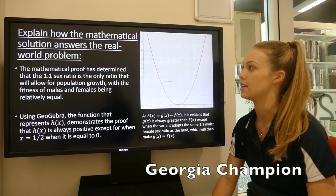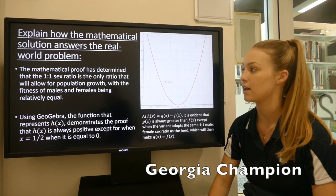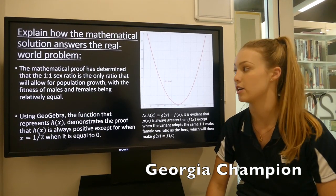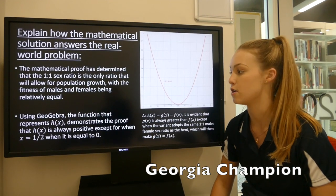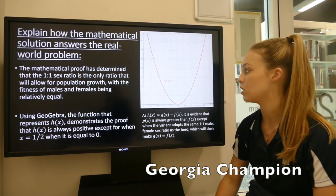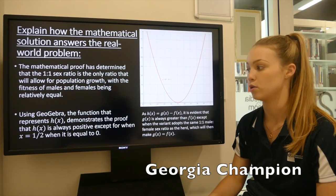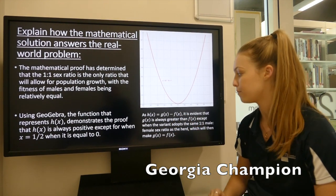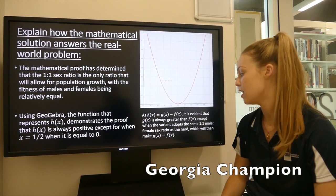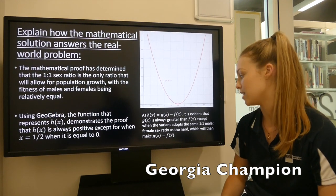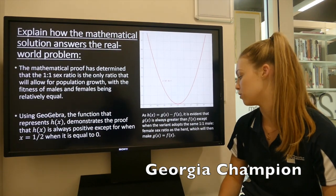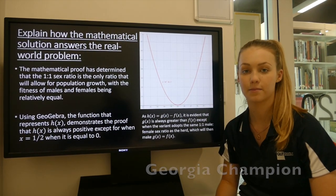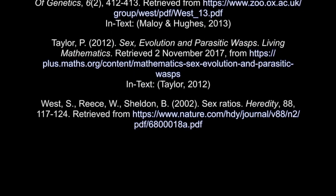So now I'll explain why the mathematical solution answers the real-world problem. The mathematical proof has determined that the 1-to-1 sex ratio is the only ratio that will allow for population growth, with the fitness of males and females being relatively equal. Using GeoGebra, the function here represents h(x) and demonstrates a proof that h(x) is always positive, except when x equals one half and h(x) is equal to 0. As h(x) equals g(x) minus f(x), it is evident that g(x) is always greater than f(x), except when the variant adopts the same 1-to-1 male to female sex ratio as the herd, which then makes g(x) equal to f(x).